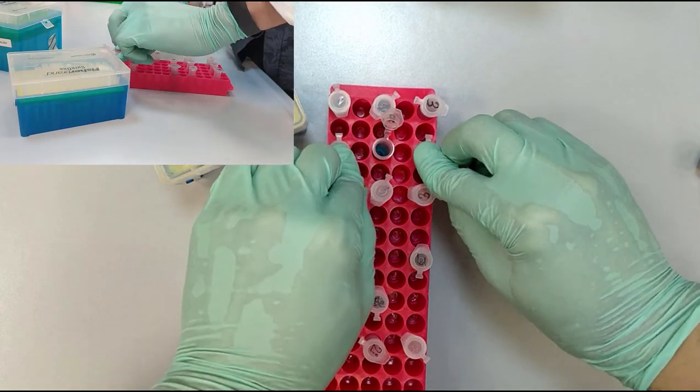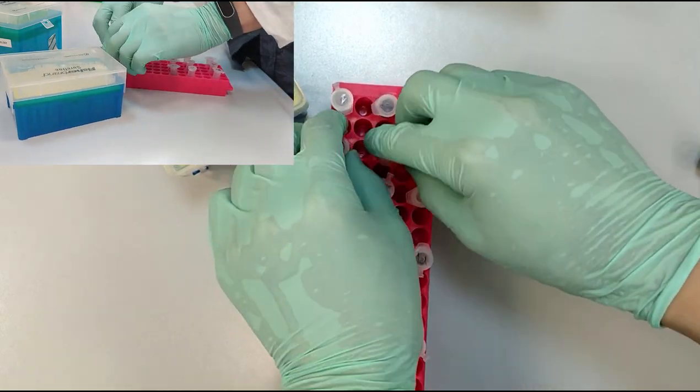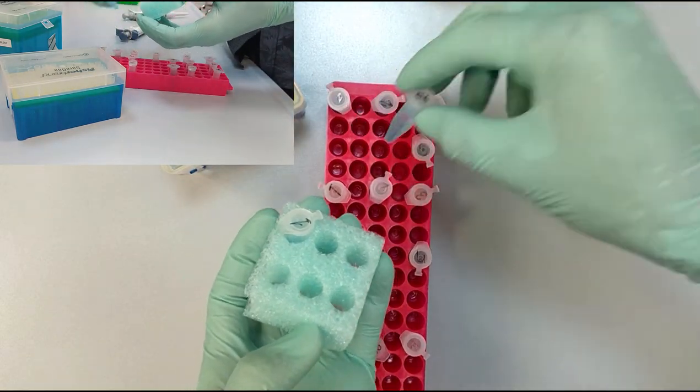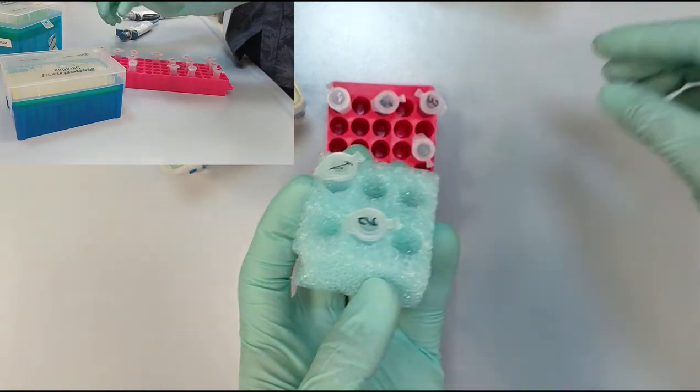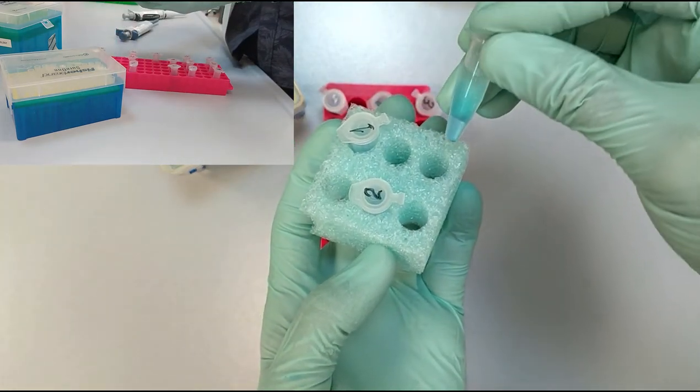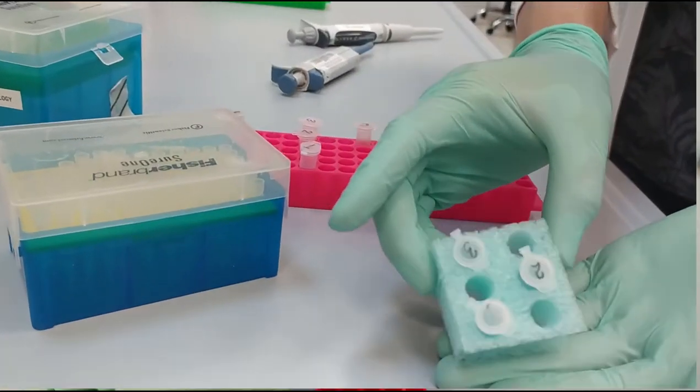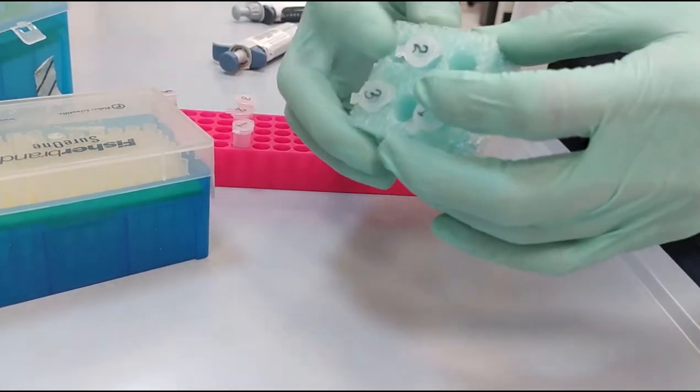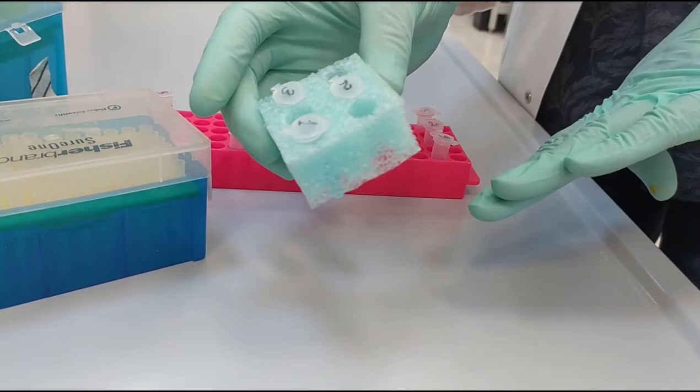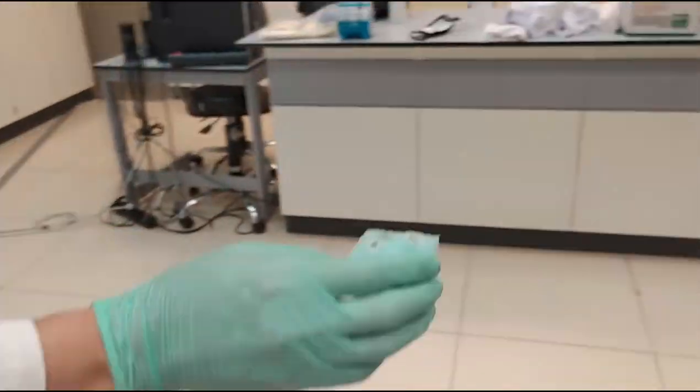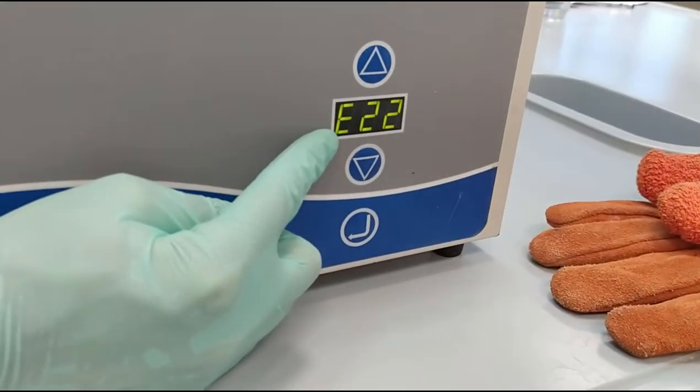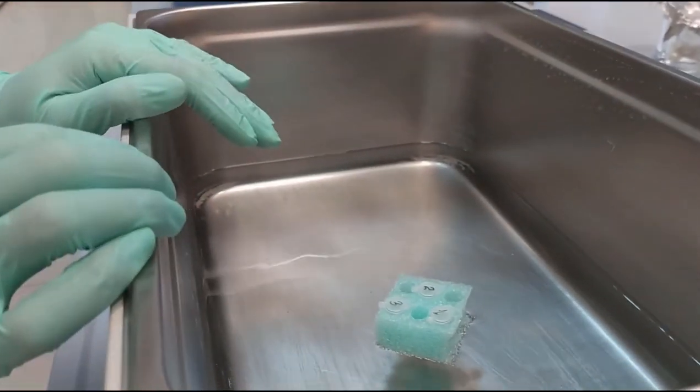Now close the lids, and we need to transfer these Eppendorfs to the 60 Celsius degree water bath so that the reaction happens. Here you can see the foam holders that will not let these Eppendorfs sink and turn over. As you can see here, we have 60 degrees set up, and now we just put it for 10 minutes in the water bath.